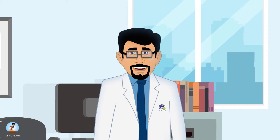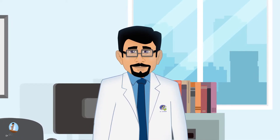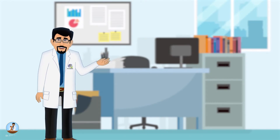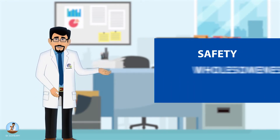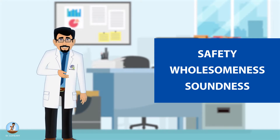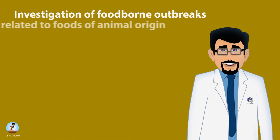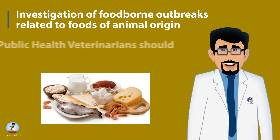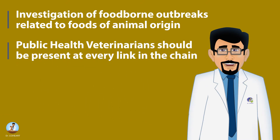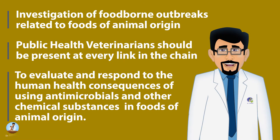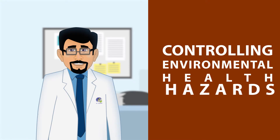VPH also focuses on food protection. Food protection includes all the measures necessary for ensuring the safety, wholesomeness, and soundness of food at all stages from its production to its final consumption. This includes investigation of foodborne outbreaks related to foods of animal origin. Public health veterinarians should be present at every link in the chain and evaluate and respond to the human health consequences of using antimicrobials and other chemical substances in foods of animal origin.